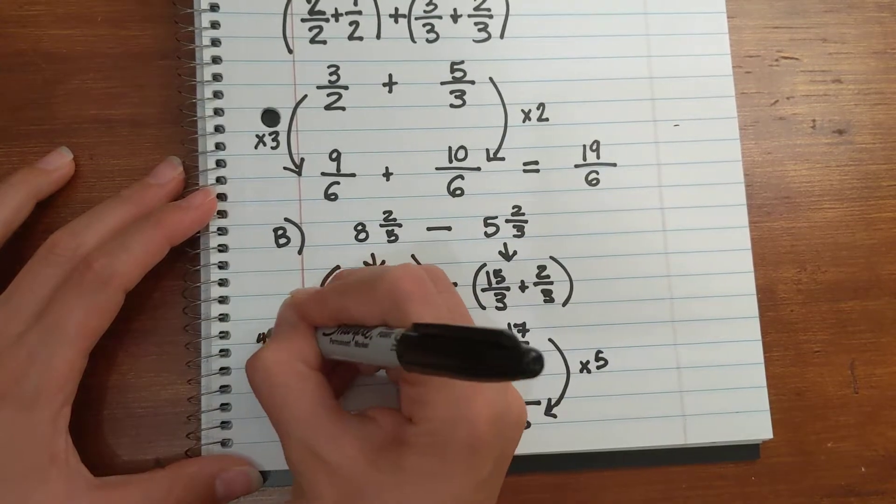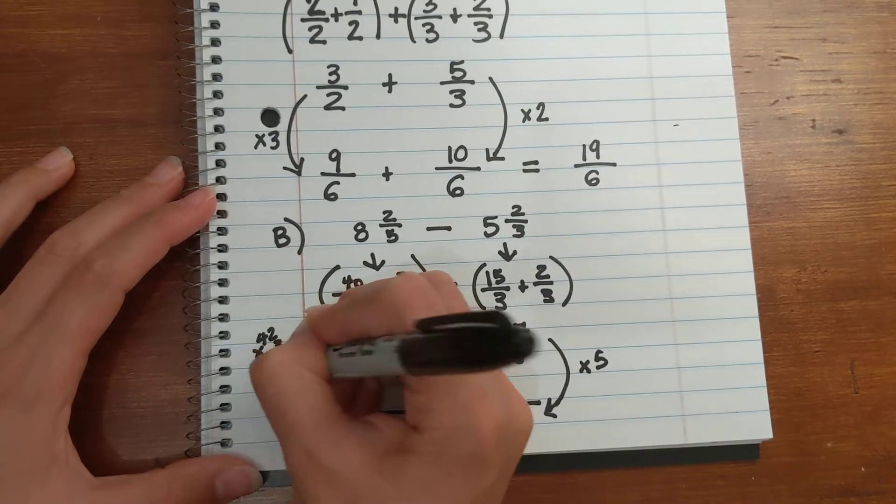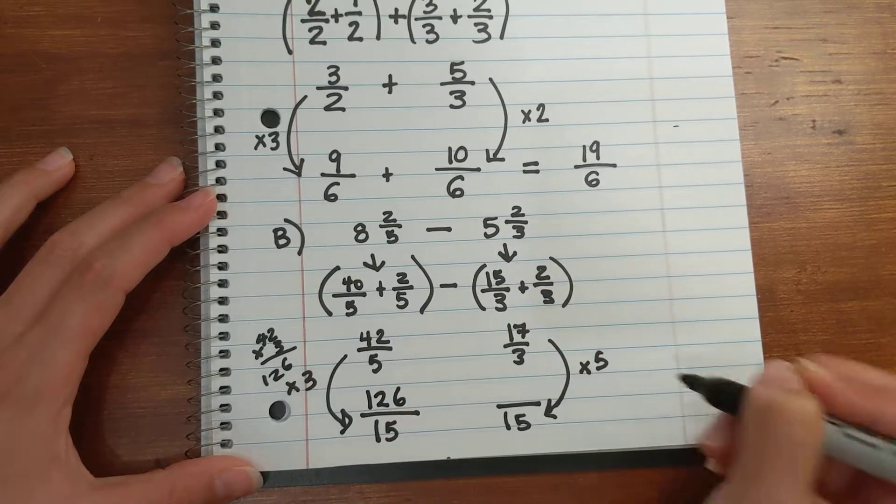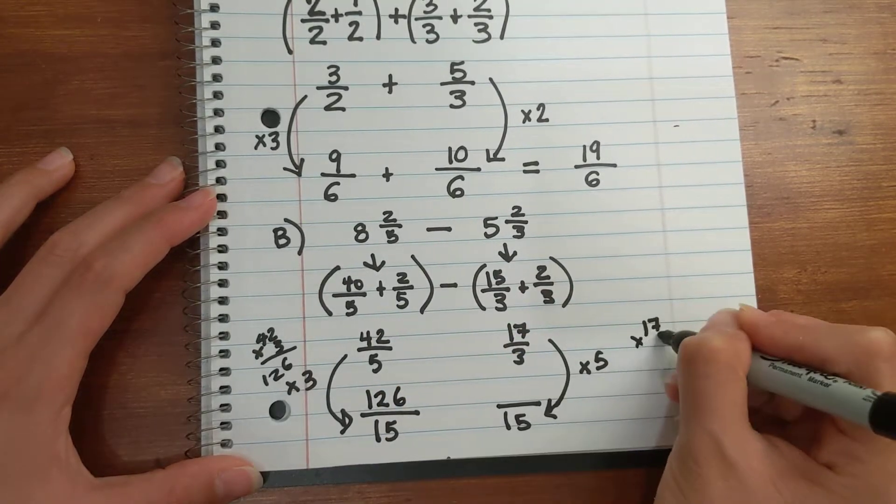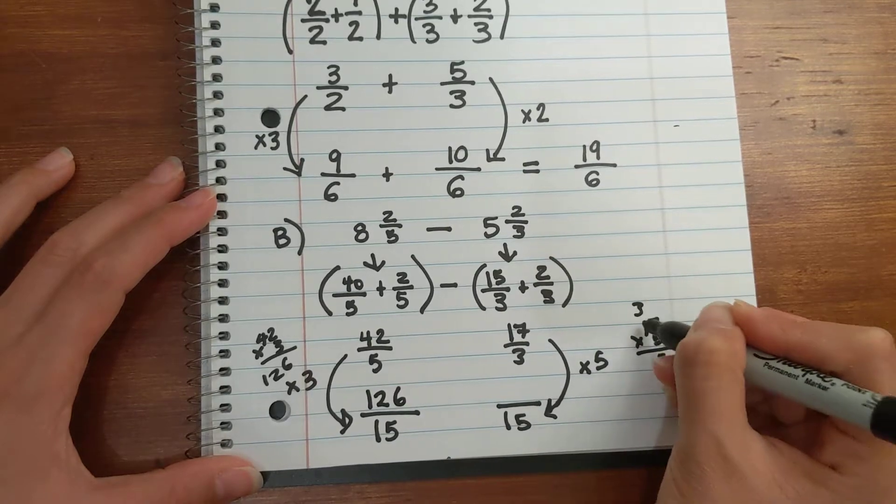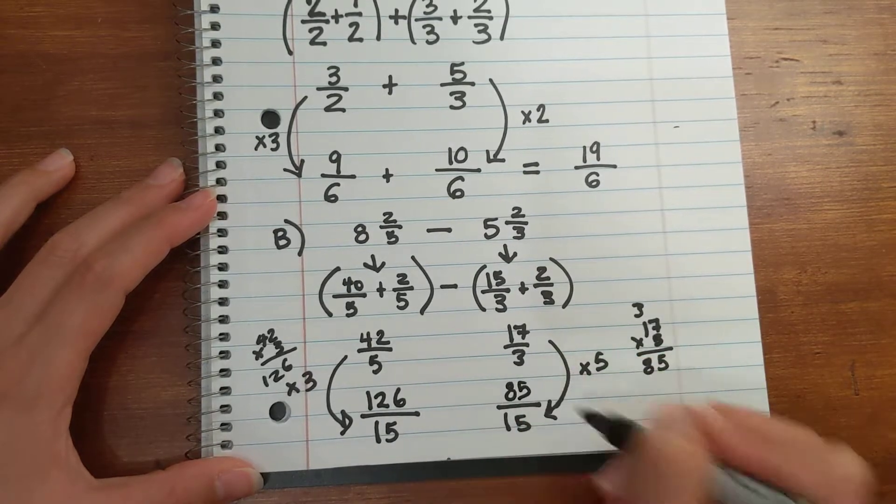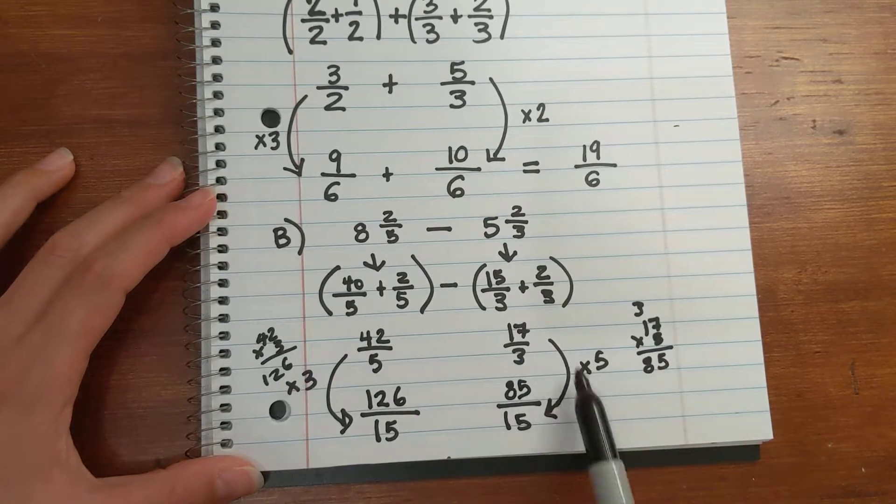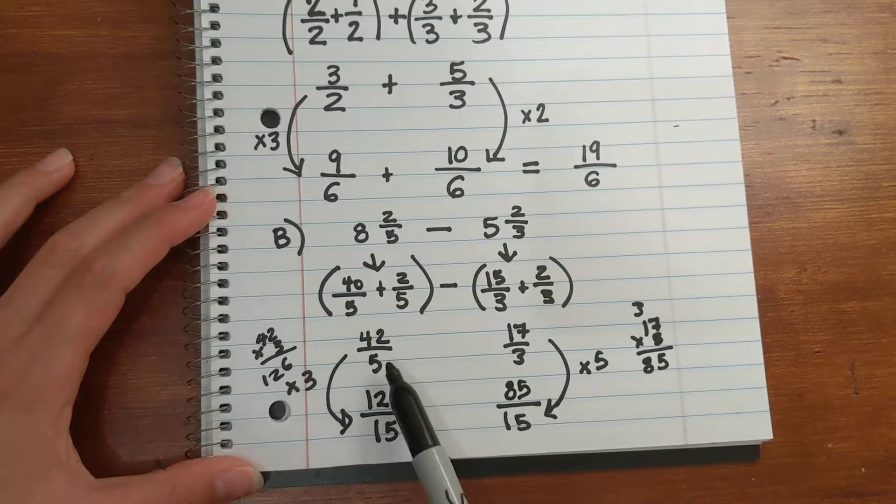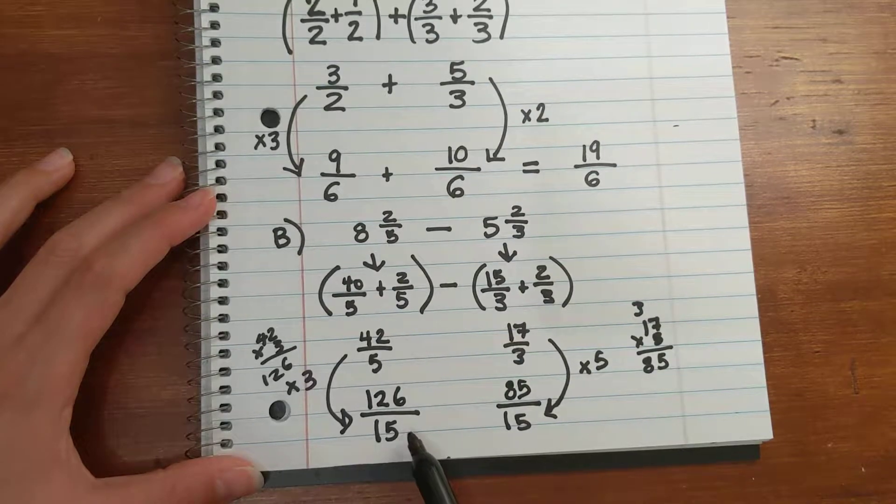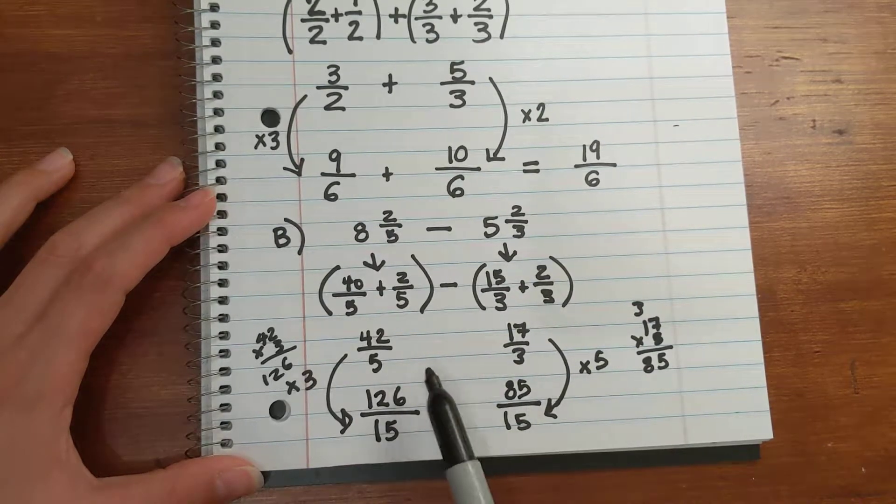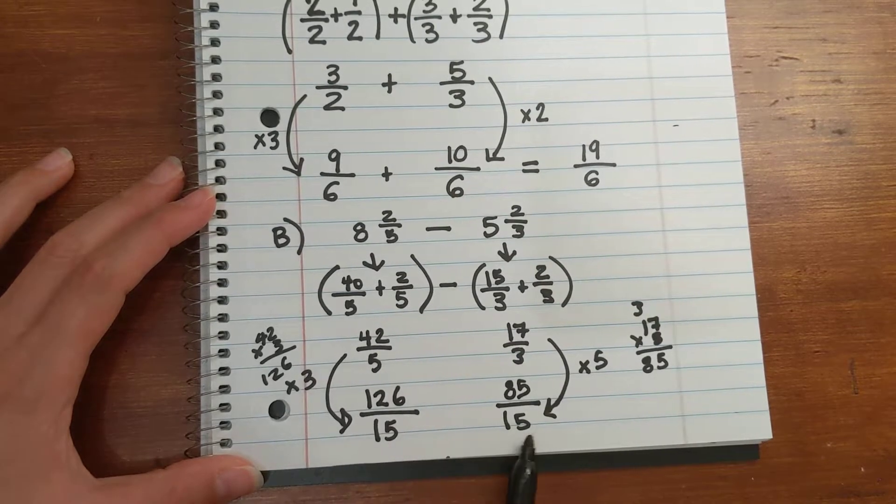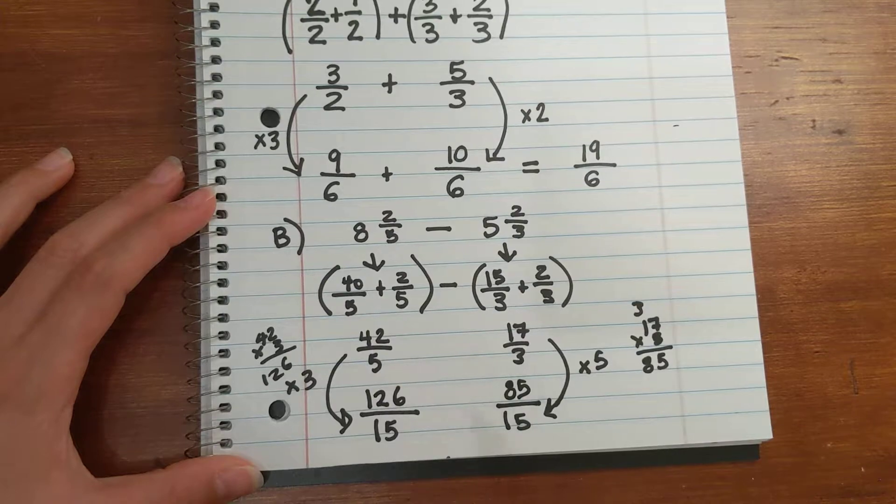And on top, I'm just going to make sure I don't get this wrong. 42 times 3 is 6, 12, 126 fifteenths. And then 17 times 5, 85, 85 fifteenths. Remember, 17 thirds and 85 fifteenths are equivalent fractions. 42 fifths and 126 fifteenths are equivalent fractions. You're basically finding equivalent fractions to your original fractions that have the same denominator. That's why the number usually gets higher.